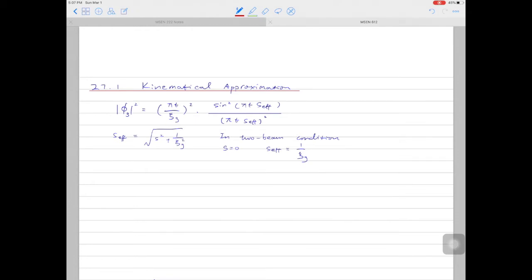In the two-beam condition, the excitation error is equal to zero, the effective excitation error is equal to one over ξg. We can simplify the expression as this form. In this case, the intensity of the diffracted beam is strongly coupled with the intensity of the direct beam. So we call this scenario the dynamical approximation.